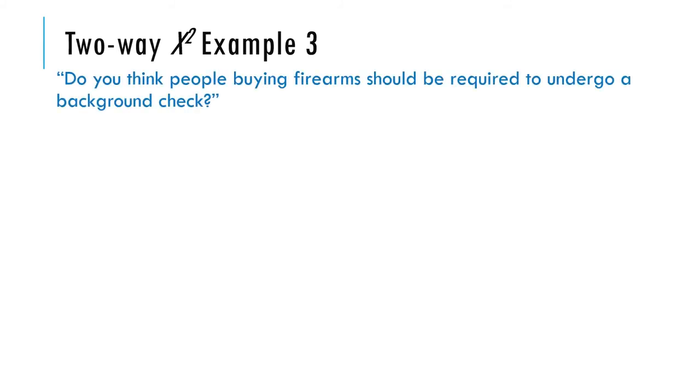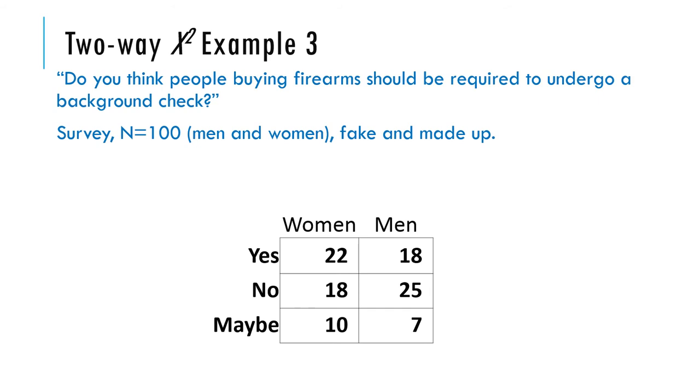Let's do another example. There's a survey of whether people think that people buying firearms should be required to undergo a background check. In this survey there were 100 people, men and women, faking made-up data. Maybe this is the result you found. The question is, is there an association? You have enough information, go ahead and figure this out. I might have used alpha as 0.05. If you want to get some practice, work this all out on your own. Figure out the answer.